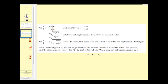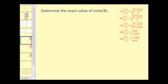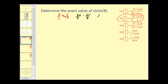Let's take a look at some problems. Here we want to determine the exact value of sine of pi over eight. We're going to use this identity. The first thing we should do is find the value of angle A. We want A over two to equal pi over eight. So if we perform cross products, we'll have eight A must equal two times pi. Dividing by eight, we can see that A must equal two pi over eight, or pi over four.